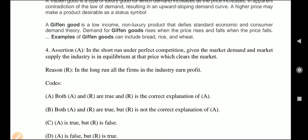Question 4 is assertion and reason based. Assertion: in the short run under perfect competition, given market demand and market supply, the industry is in equilibrium at the price which clears the market. Reason: in the long run, all firms in the industry earn profit. The options are: both A and R are true and R is the correct explanation; both true but R is not the correct explanation; A is true but R is false; A is false and R is true. Perfect competition has free entry and exit.